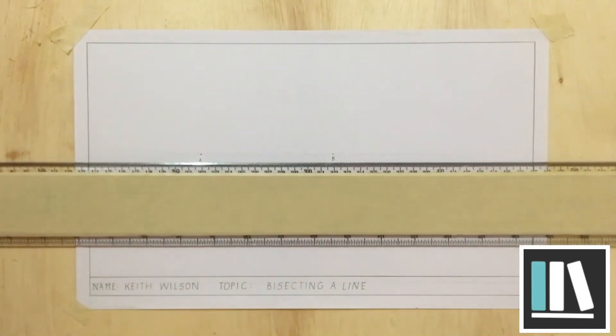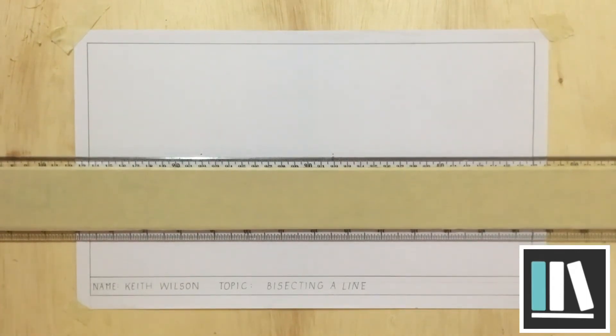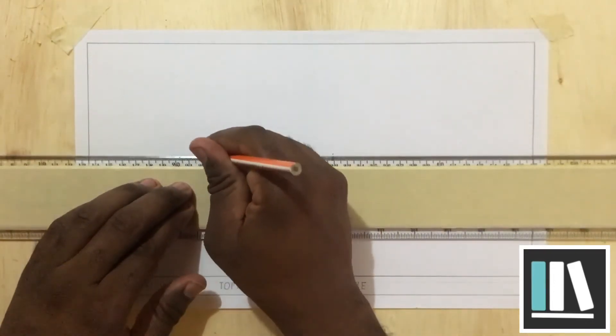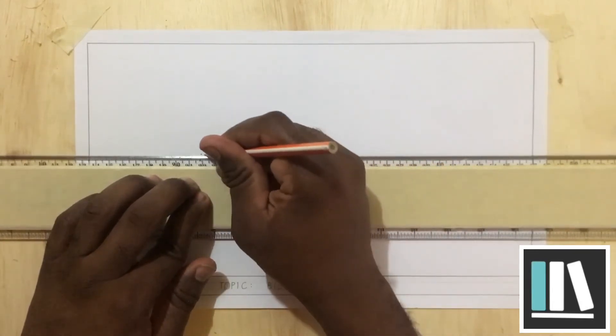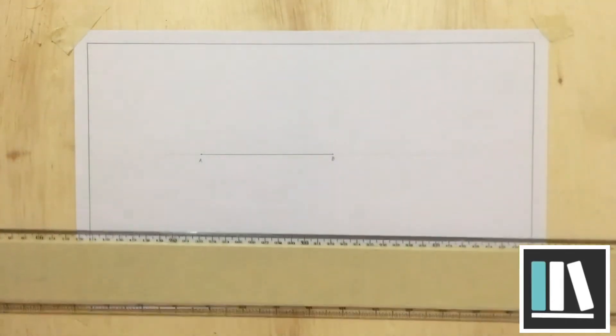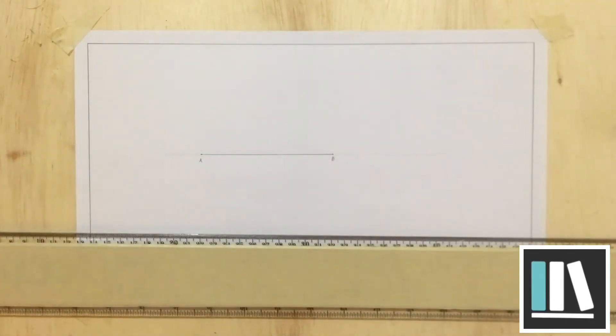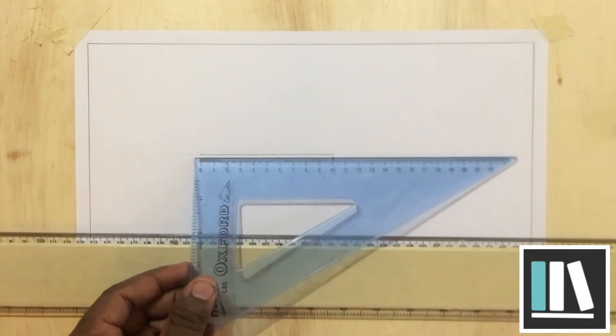For the next step, I am going to connect point A to point B using an outline. Like this. Now, I have my line. And in technical drawing, we name lines according to the starting point and the ending point of the line. So, this line can now be called line AB. And this particular line measures 100 millimeters or 10 centimeters.